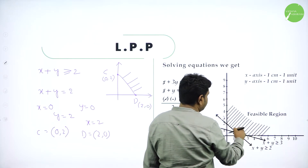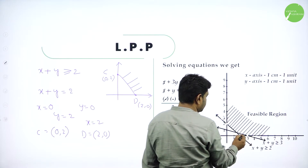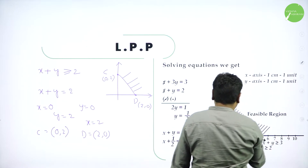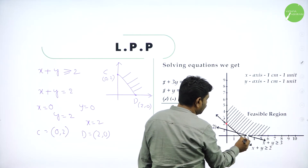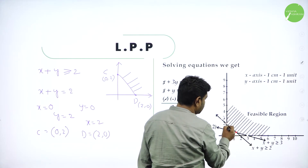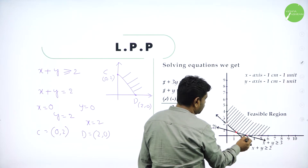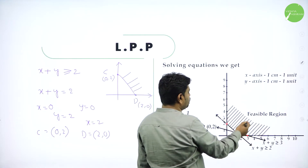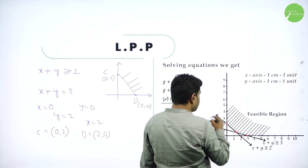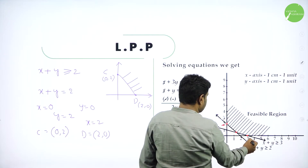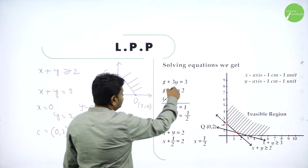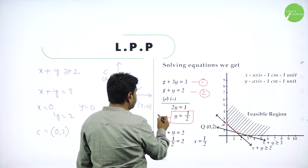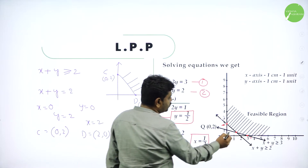After identifying the feasible region, these are the vertices. We have three vertices — we call them corner points. This is an unbounded graph. The corner points are: 3 comma 0, the point of intersection 3/2 comma 1/2, and 0 comma 2. To find the point of intersection, solve the simultaneous equations: subtract the two lines, you get Y value equals 1/2. Put Y value in any one equation, you get X value equals 1/2. So the point of intersection is 3/2 comma 1/2.